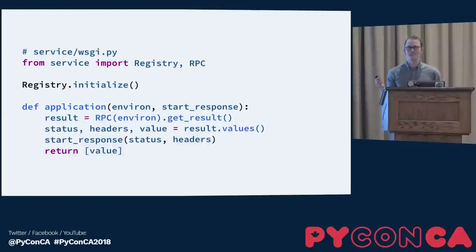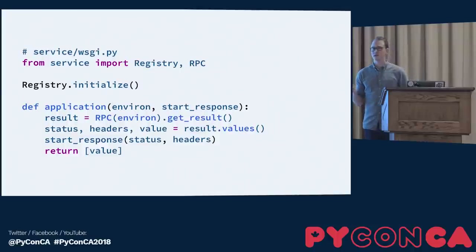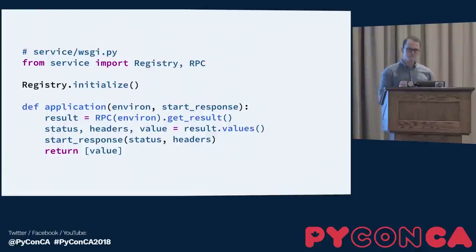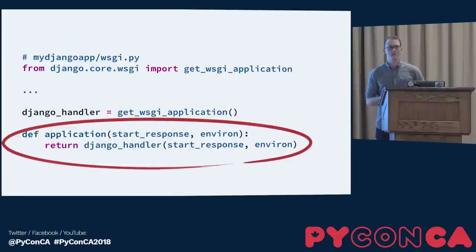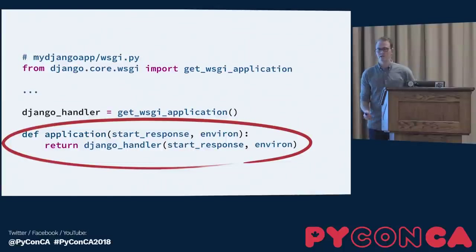I came across something that looked a lot like what I was used to in Django. I didn't understand all the other concepts — we were importing something called a registry and an RPC — but what I really zoomed in on was an application function that took a couple of arguments. That looked like something I'd seen before in Django, which had a very similar pattern also in a WSGI.py file when you start a new project.